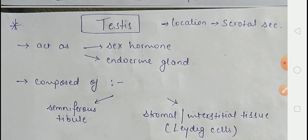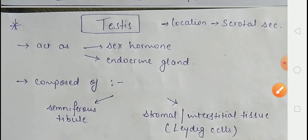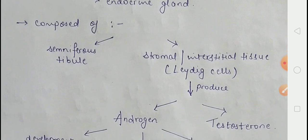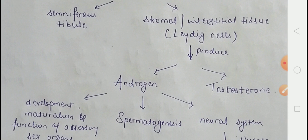Now we talk about the testes. The location of the testes is the scrotal sac, which is located outside the abdominal cavity. The testes have dual functions — they are both the primary sex organ and an endocrine gland. The testes consist of seminiferous tubules and stromal or interstitial tissues. The interstitial Leydig cells produce two hormones called androgen and testosterone.